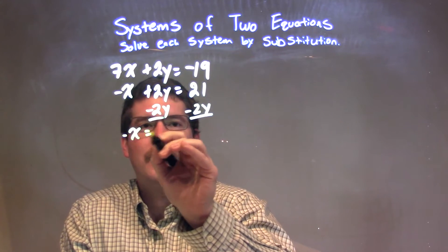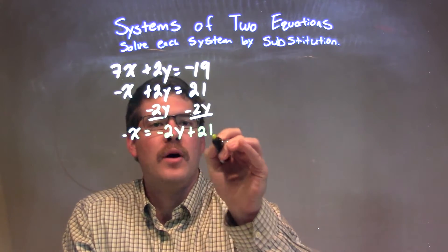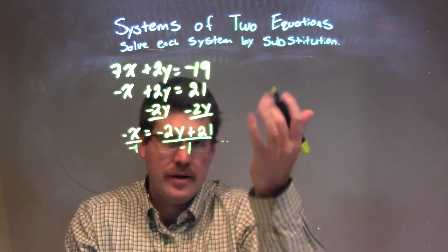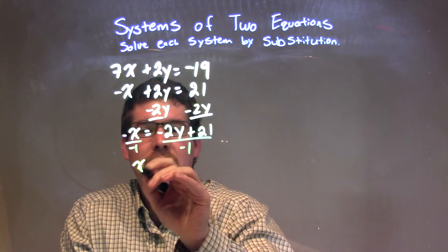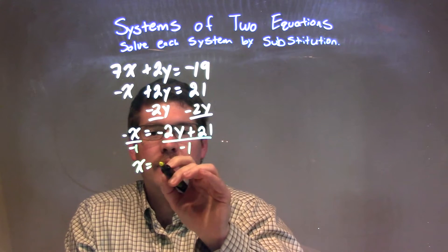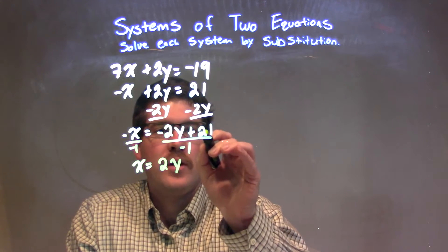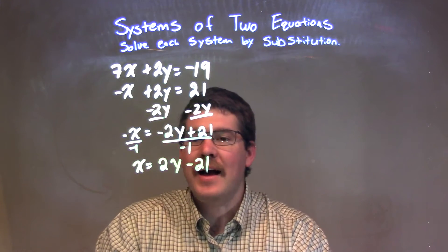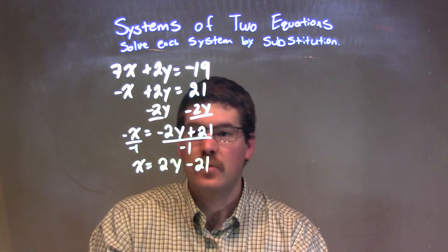I have negative x now equals negative 2y plus 21. Divide by negative 1 to both sides, or multiply to both sides, and I have x is equal to, all negative distributes, right? So negative times a negative is a positive, so we have a positive 2y, and then 21 will be a negative 21, minus 21 right there. So now I have x equals 2y minus 21.